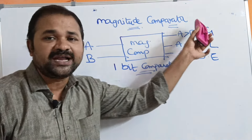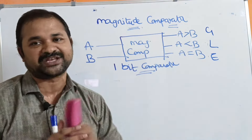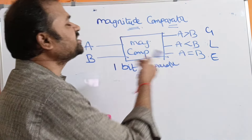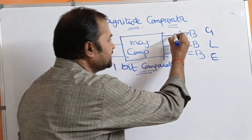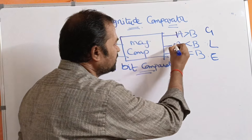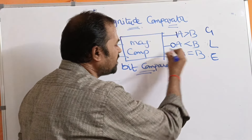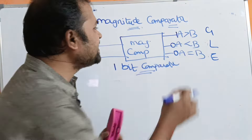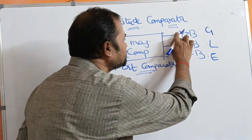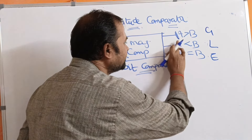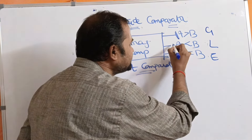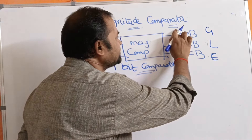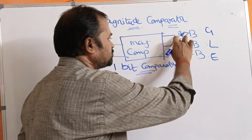At any time, only one output line will be active. Suppose if the A greater than B condition is true, then this line will be active whereas the remaining two lines are inactive. Similarly, if A less than B condition is true, then that line will be active whereas the remaining two lines are inactive.